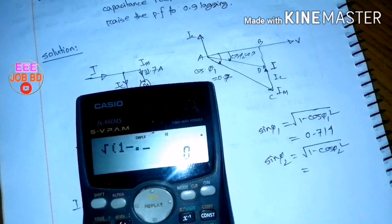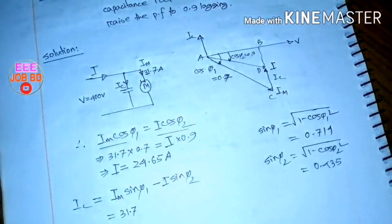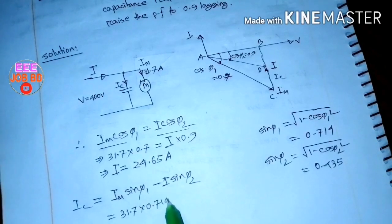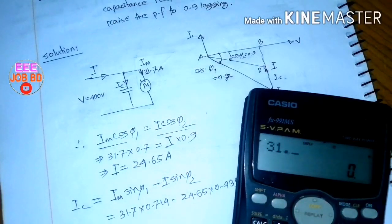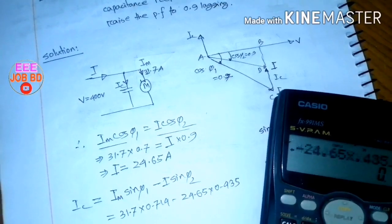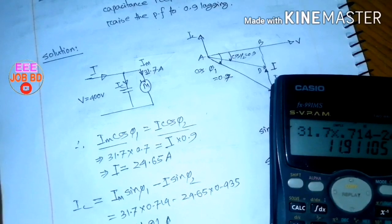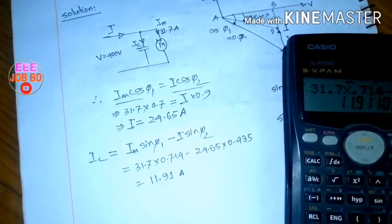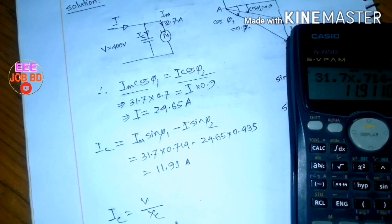We calculate root of 1 minus 0.9 squared, which gives 0.435. So IC equals 31.7 times 0.714 minus 24.65 times 0.435. The calculation gives IC equal to 11.91 amperes.